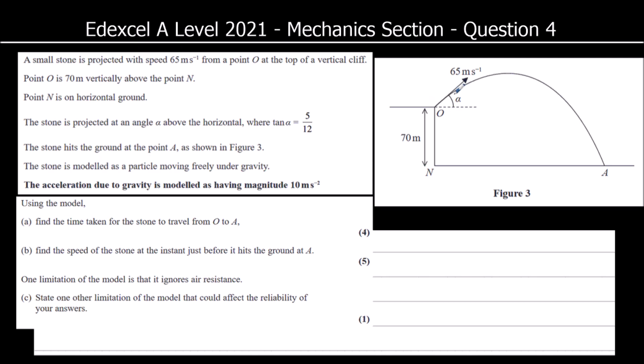The stone is projected at angle alpha above the horizontal, where tan alpha is 5 twelfths.